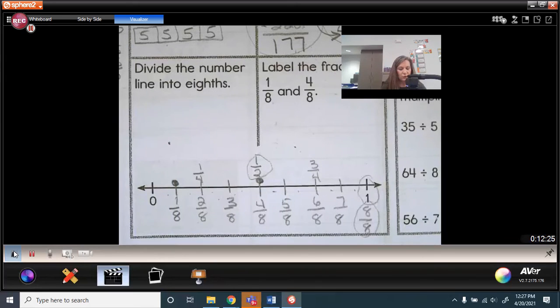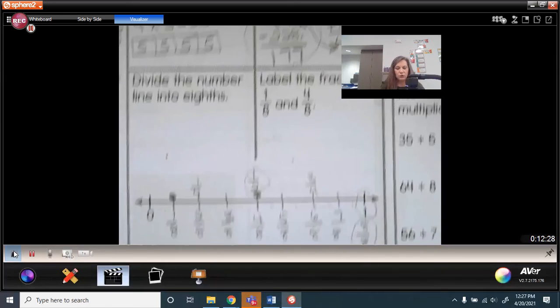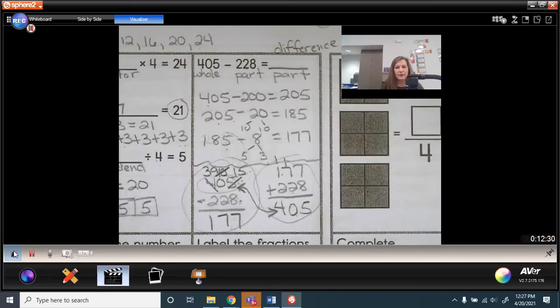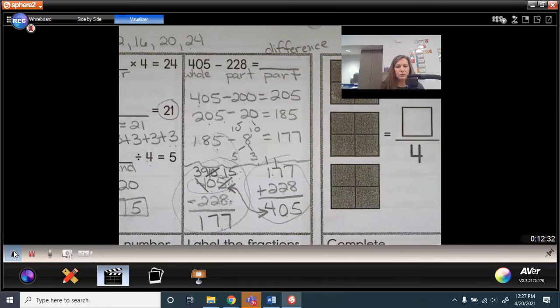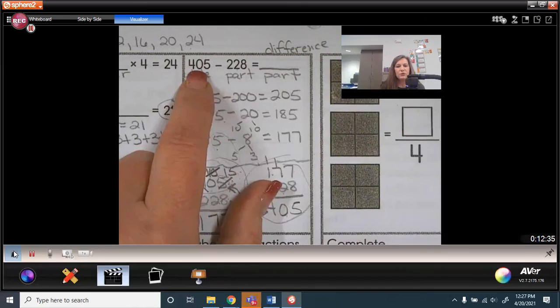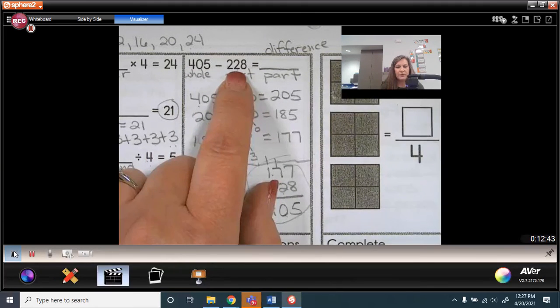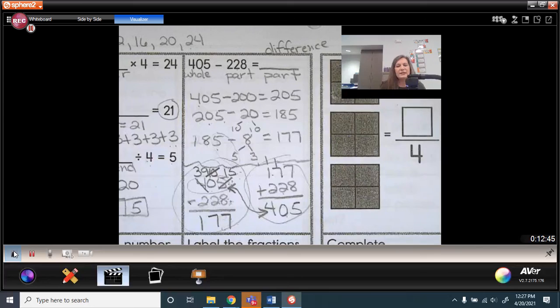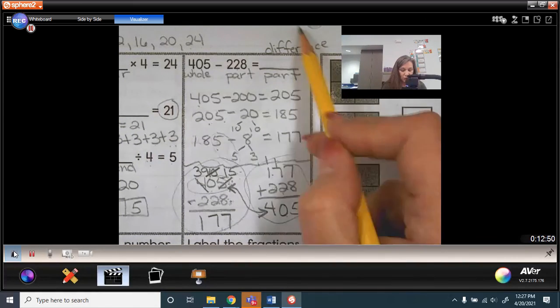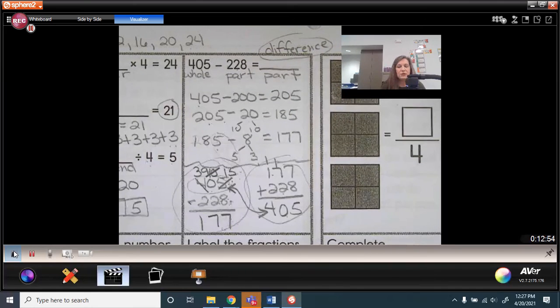Now, today what I want you to do is practice. I want you to round 405 to the nearest hundred and 228 to the nearest hundred. And I want you to find the difference and estimate the difference. Difference means you're subtracting. So round to the nearest hundred and then subtract to find the difference. I'll be checking later and have a great Wednesday, guys.